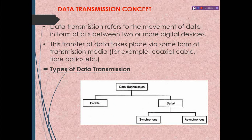First, the data transmission concept. Data transmission refers to the movement of data in the form of bits between two or more digital devices. This transmission takes place via some transmission media, either guided media or unguided media. Types of data transmission are two: parallel transmission and serial transmission. Serial transmission is further divided into synchronous data transmission and asynchronous data transmission.